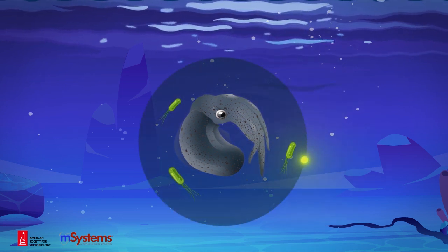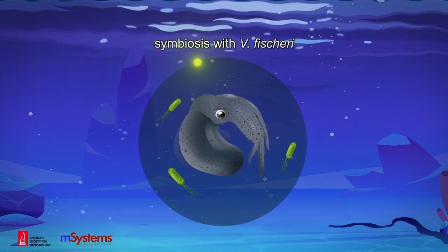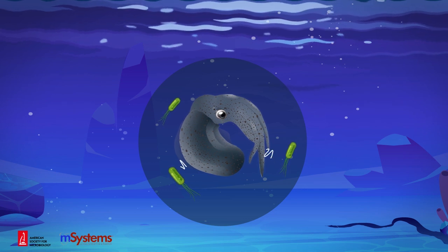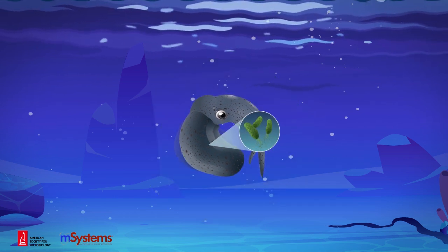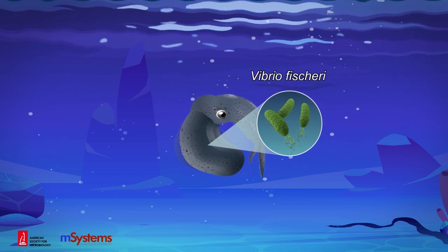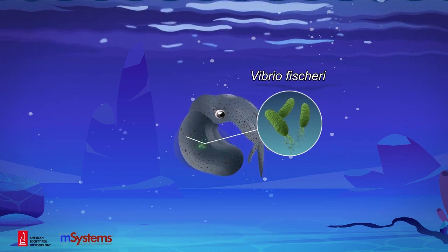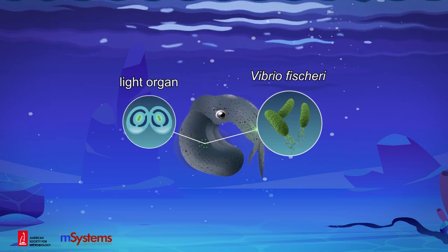Early events in squid development lead to the initiation and persistence of the symbiosis with V. fischeri. Communication between the squid host and its bacterial partner begins in the first hours of the host's life, as V. fischeri cells aggregate just outside of the tissues they will colonize, where they prime for the harsh journey ahead. Vibrio bacteria colonize specialized light organs of the squid by migrating through host tissues, signaling along the way.